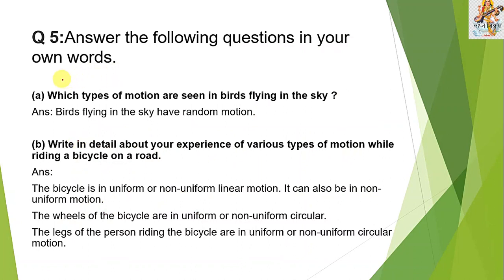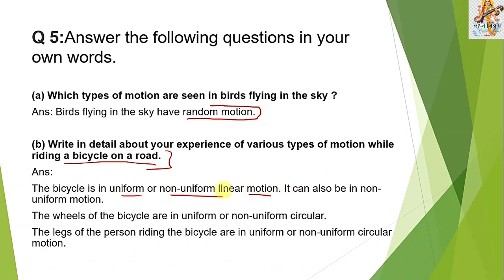Question 5: Which types of motion are seen in birds flying in the sky? Birds fly like fish swimming in water — they move in random motion. Regarding riding a cycle: the bicycle itself is in uniform or non-uniform linear motion. The wheels of the bicycle are in uniform or non-uniform circular motion, rotating around themselves but not always at uniform speed. The legs of the person riding the bicycle are also in uniform or non-uniform circular motion.